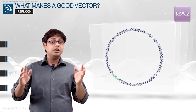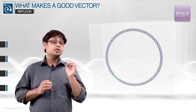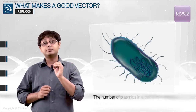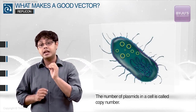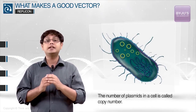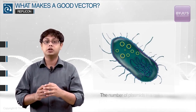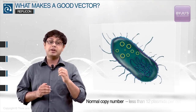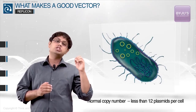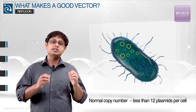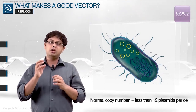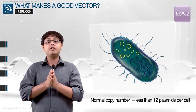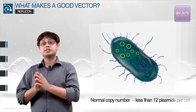What is copy number? Simply put, the number of plasmids in a cell is called its copy number. The normal copy number of plasmids in most bacterial cells is small, usually less than 12 plasmids per cell.